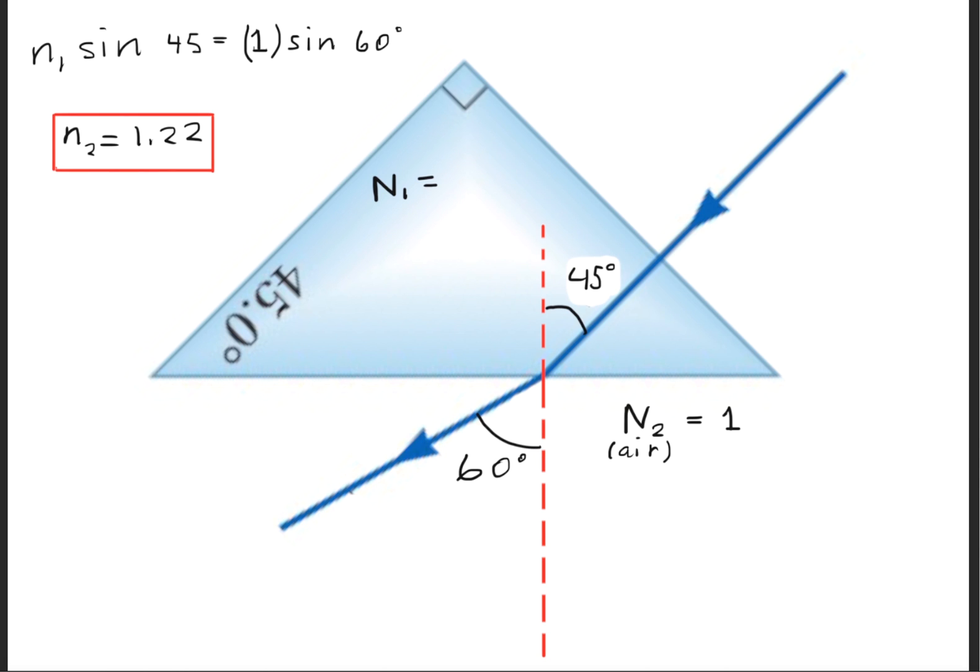So go ahead and apply Snell's Law. We'll have n1 times sine of 45 is equal to 1 times sine of 60 degrees. We'll find that we'll get an index of refraction for the prism to be 1.22.